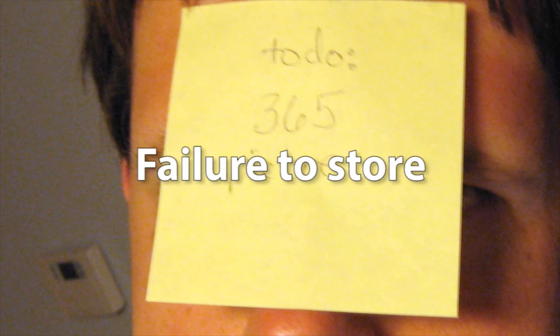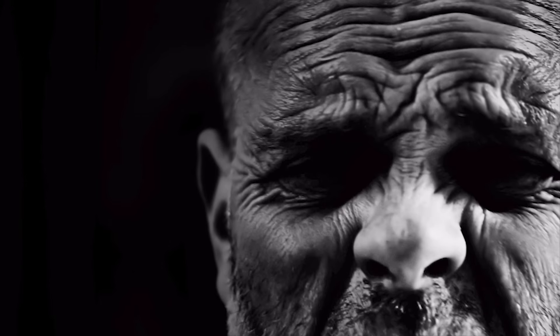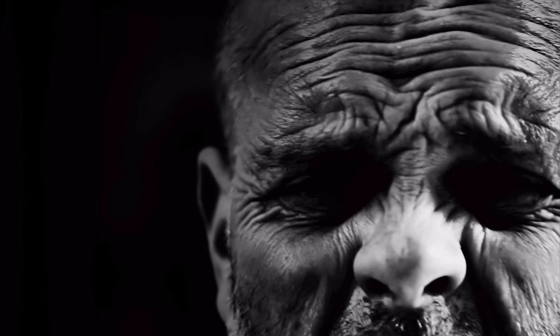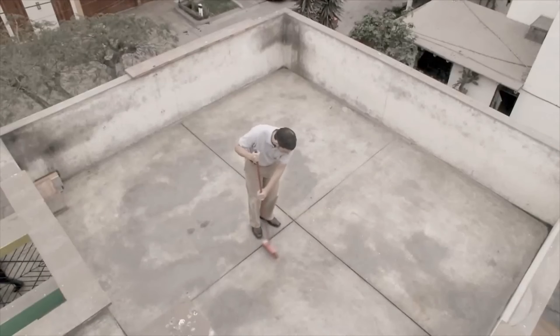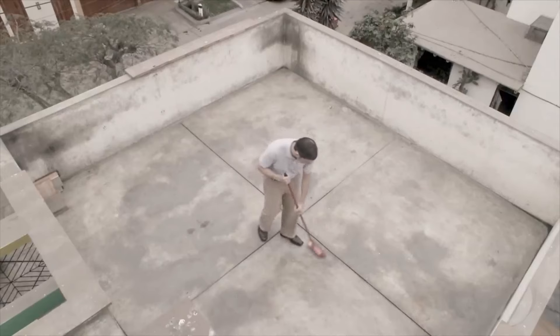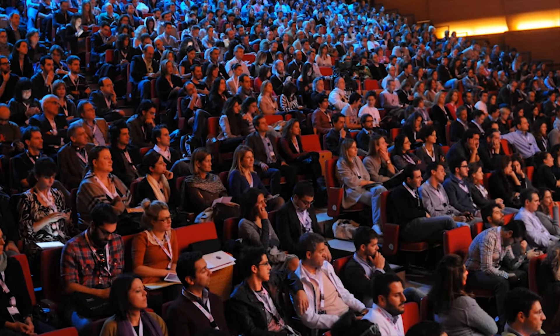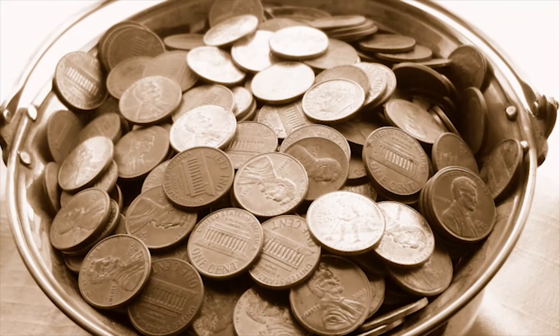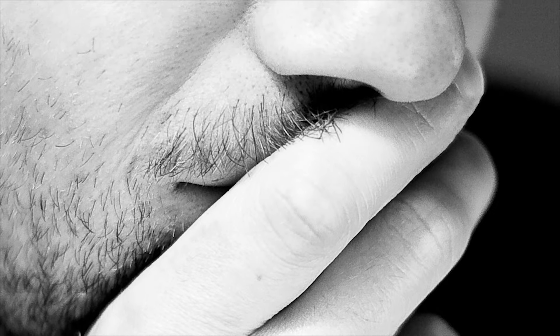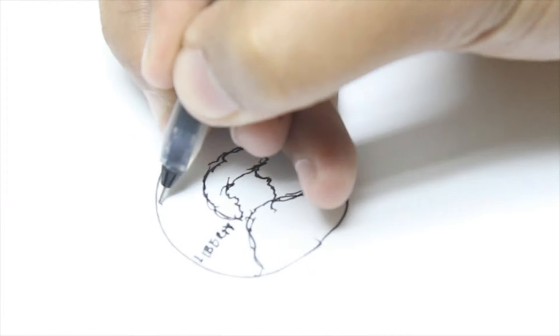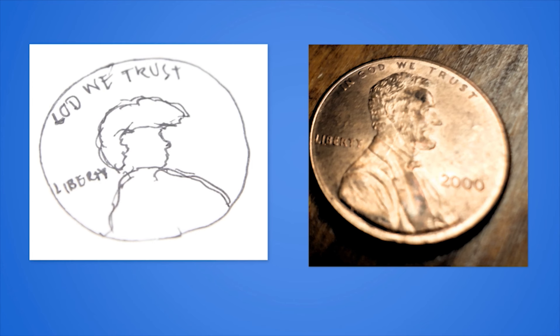This interference can most likely happen with information that is very similar to other information previously stored in memory. The third theory is failure to store. This has less to do with forgetting and more to do with the fact that the memory never made it into long-term memory in the first place. An example can be seen in an experiment by Nickerson and Adams, where researchers asked participants to identify the correct U.S. penny from a group of incorrect pennies. Chances are you could remember the shape and color of the penny, but probably forgot other minor details.